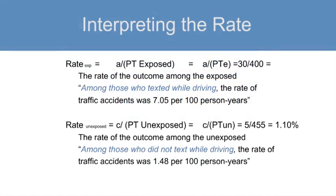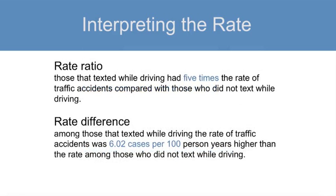Among those who texted while driving, the rate of traffic accidents was 7.5 per 100 person years, whereas among those who did not text while driving, the rate was 1.48 per 100 person years. For the rate ratio, those that texted while driving had 5 times the rate of traffic accidents compared to those who did not text while driving. For the rate difference, the rate of traffic accidents was 6.02 cases per 100 person years higher among those who texted while driving.